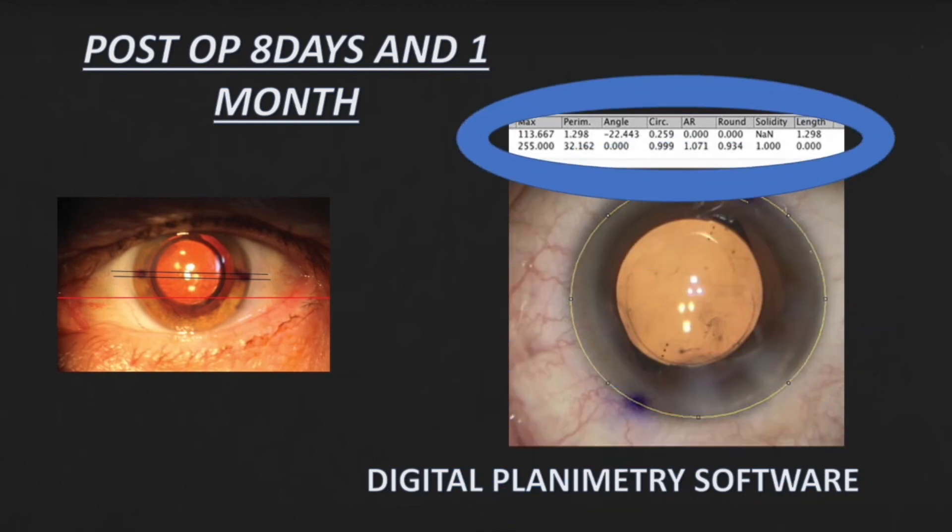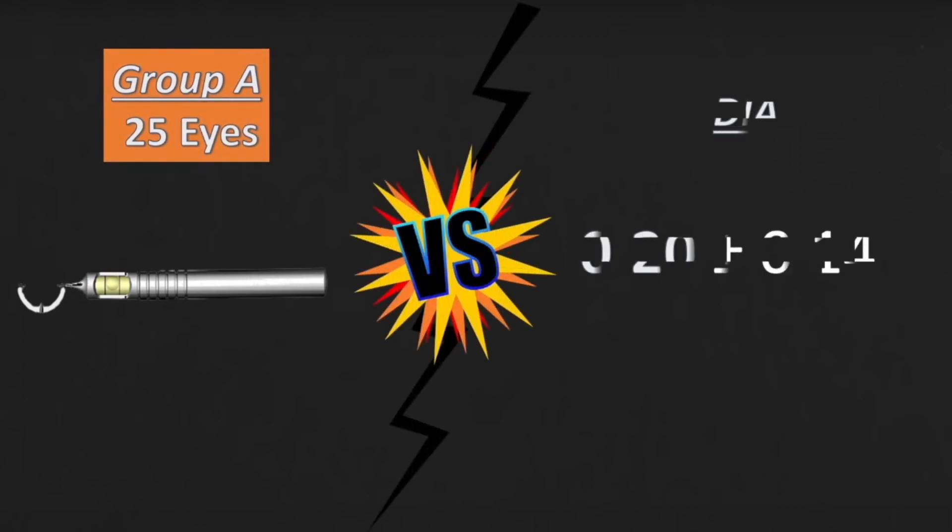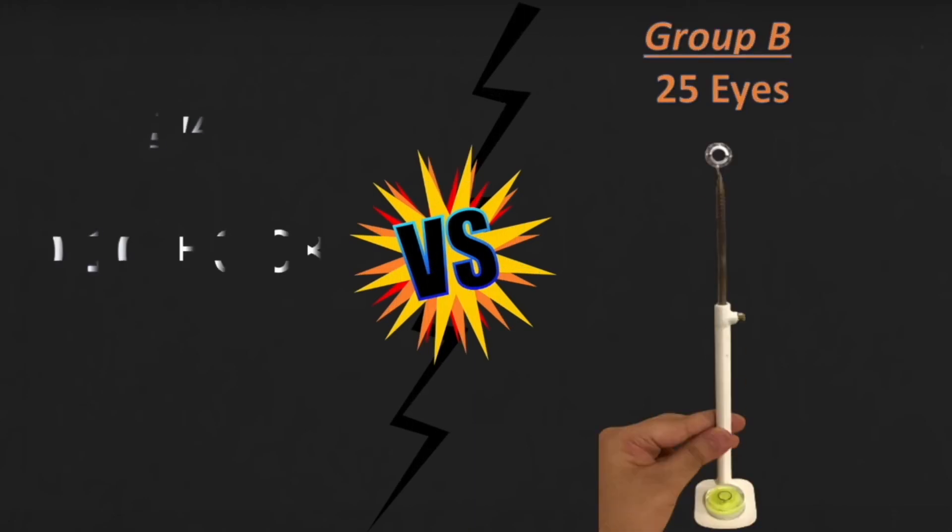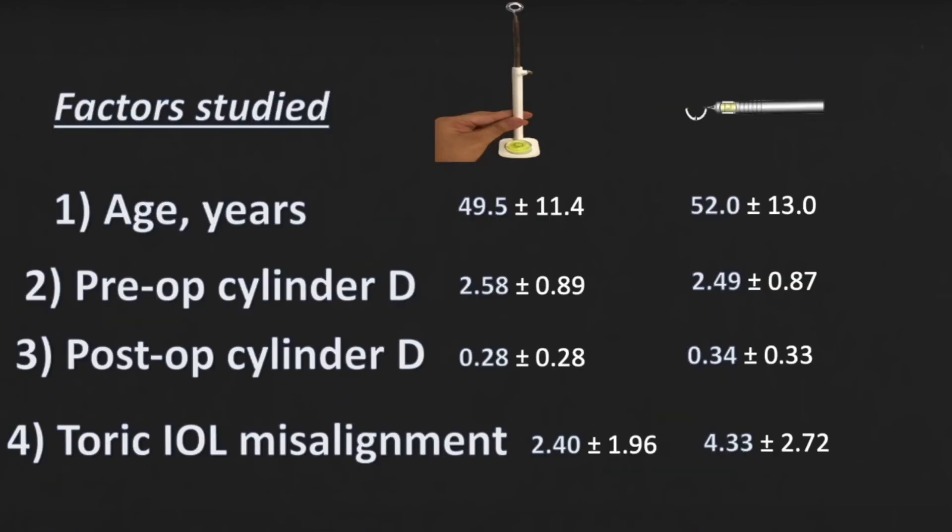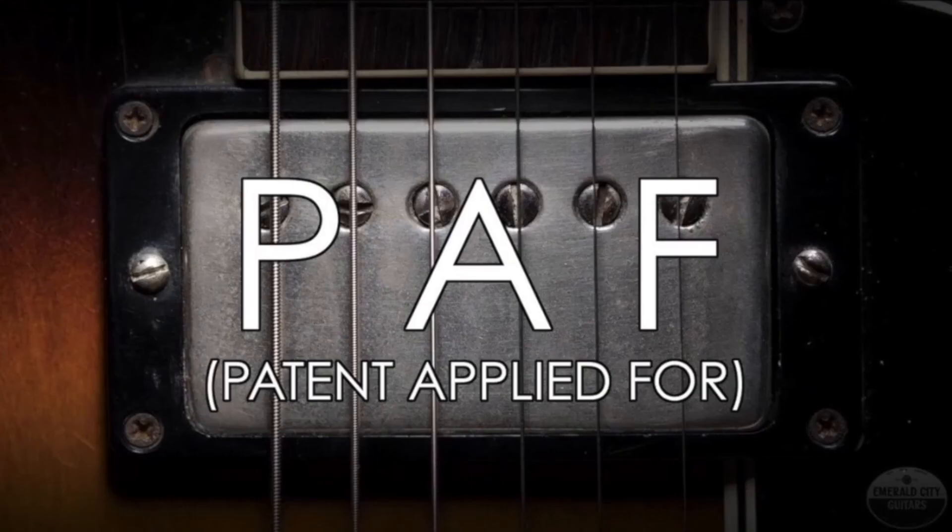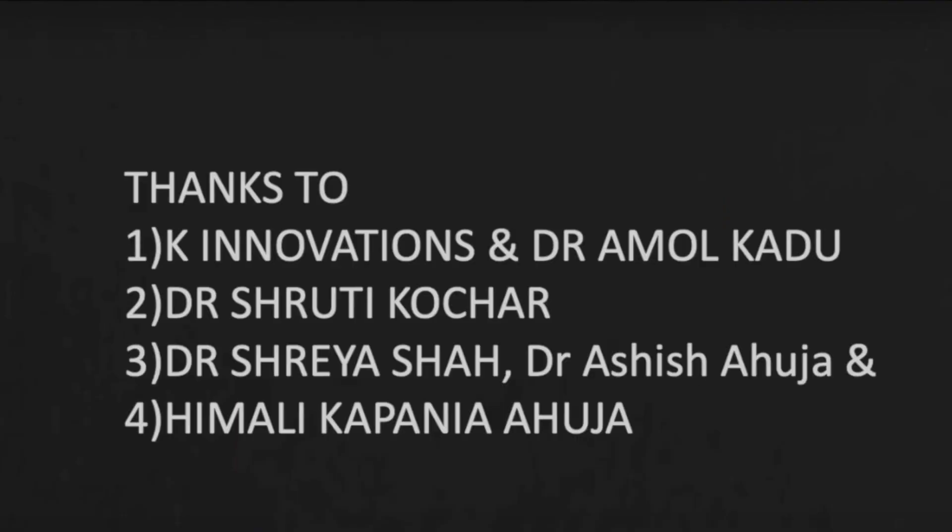Thus we actually saw that the deviation in axis with the conventional toric marking is much more as compared to the deviation axis with our toric marker. Not only this, but the other factors that were studied using our toric marker showed better results as compared to the conventional toric marking. Hence the quest to find an economical, stable, and easy to use toric marker now ended with our STORM. Patent has been applied, clinical trials are still going on.